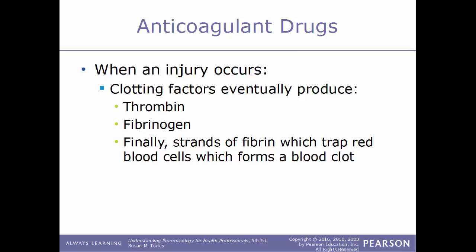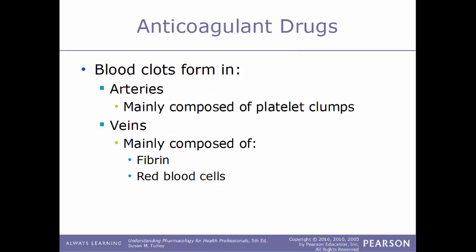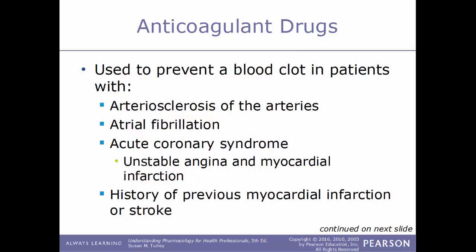The clotting factors will eventually produce thrombin and fibrinogen, which is converted into fibrin. Fibrin acts as a very sticky, strong type of spider web, and this netting traps red blood cells as they pass the injured area, helping form a blood clot. Blood clots can form in arteries and veins. In arteries they are mainly composed of platelet clumps; in veins they are mainly composed of fibrin and red blood cells.